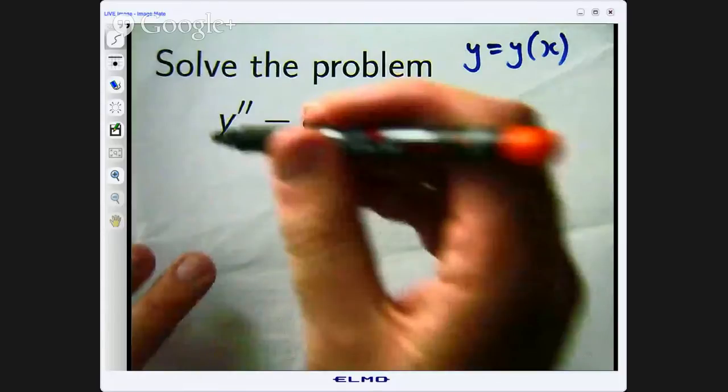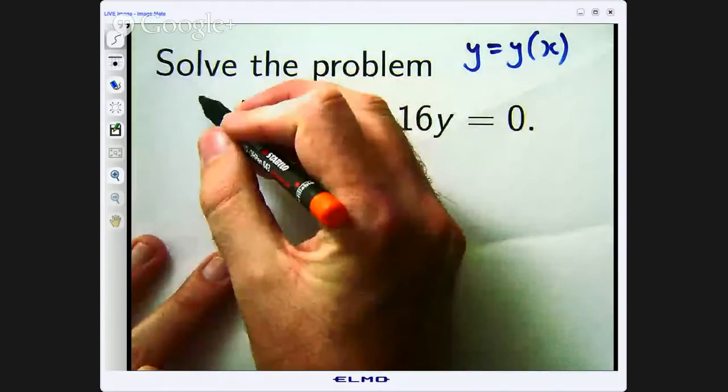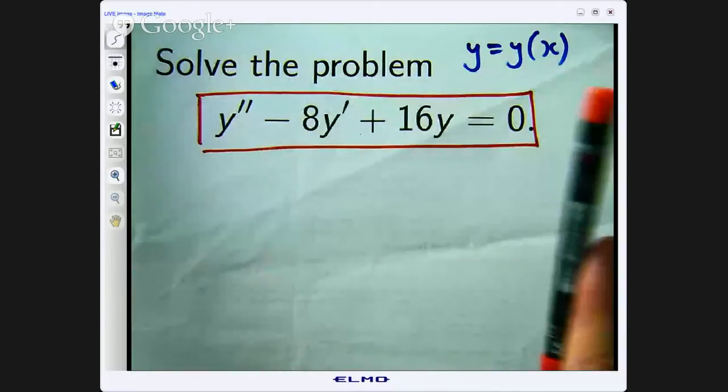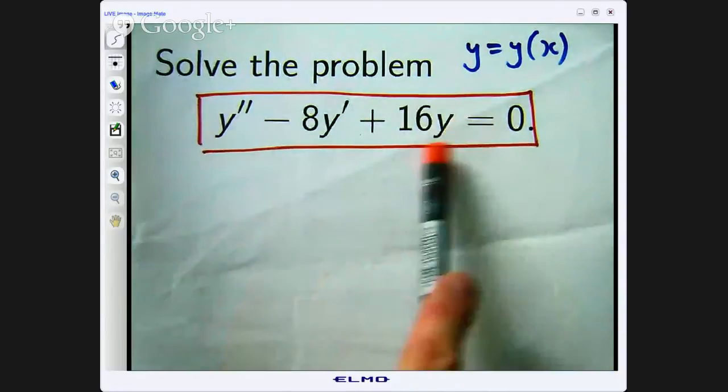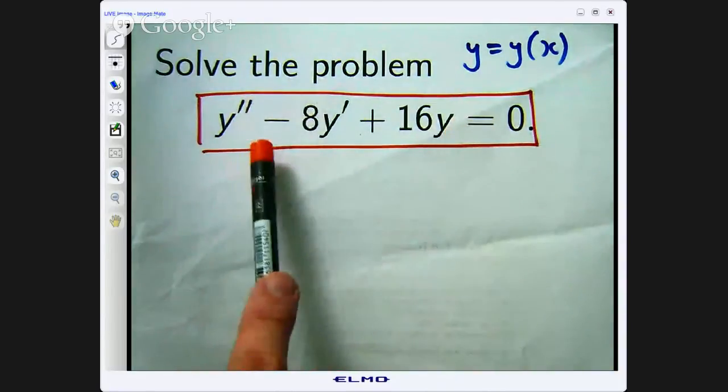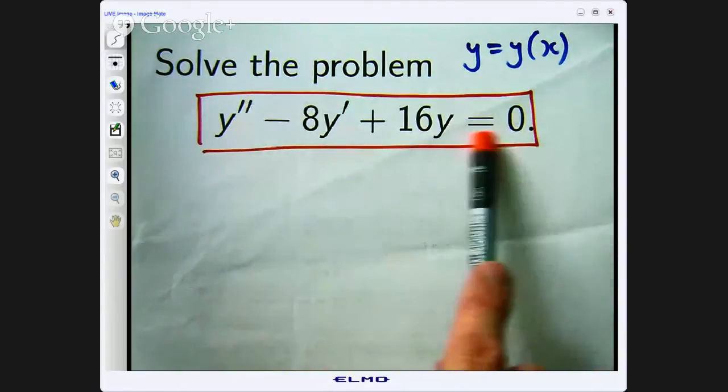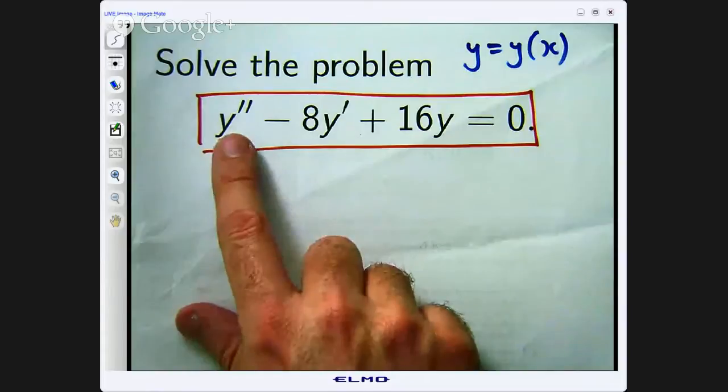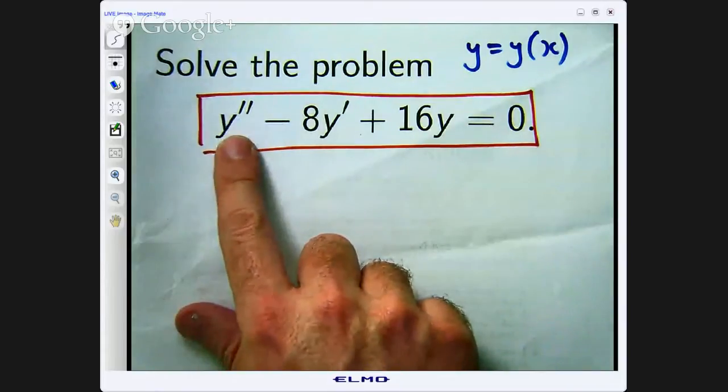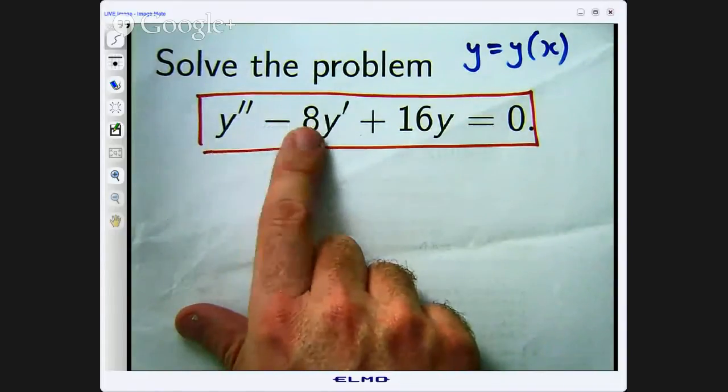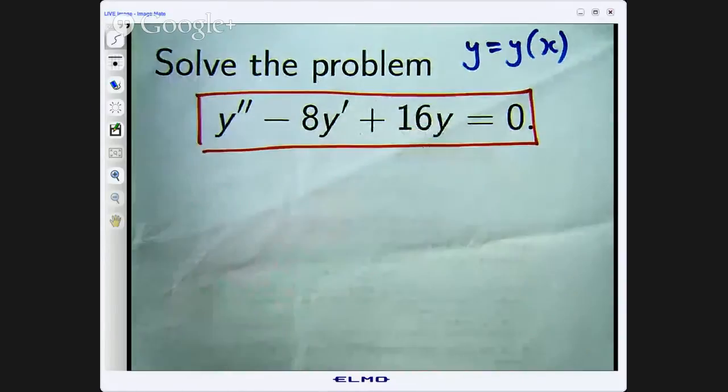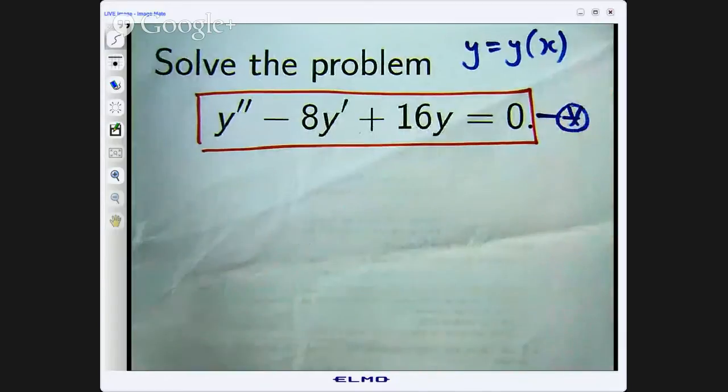Now, this equation here is what is known as a differential equation. There is an equal sign and there is some unknown function that satisfies the equation. So the function that we are looking for has a second order derivative such that when you take away 8 times the first derivative plus 16 times the function, everything sort of cancels out to give 0.